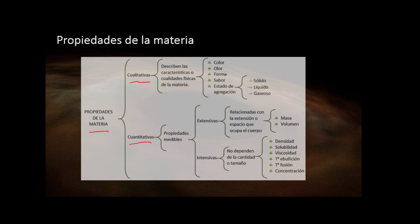Las propiedades cualitativas no dependen de la cantidad de materia y no se pueden determinar con una escala numérica. Por ejemplo, ¿qué tan amarilla está la pared? No podrías decir está amarillo 8. O cuando percibes el olor de una guayaba, si le preguntas a alguien si es intenso o ligero, va a decir 'pues huele a guayaba, profe'. La percepción de cada persona es distinta con respecto a la materia. No tiene una escala numérica que yo pueda medir. Por eso se llaman cualitativas.